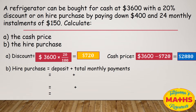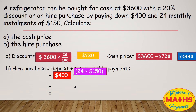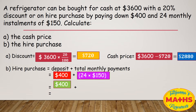Now for hire purchase, part B. The pay down is $400 and there are 24 monthly installments of $150. So the deposit is $400, plus for every month — for 24 months — this customer has to pay $150, so we multiply 24 by $150 to get $3,600. Adding that to the deposit of $400 gives us a total of $4,000.